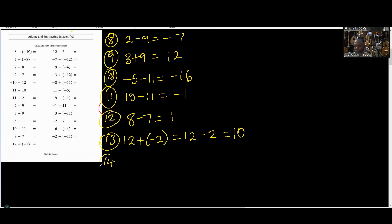Number 14 is 12 minus 6. So 12 minus 6 is simply 6. Number 15 — look at this one, surrounded with minus signs. We have negative 7 minus negative 12. We'll firstly deal with the middle minus by multiplying: negative times negative is positive. So we have negative 7 plus 12.